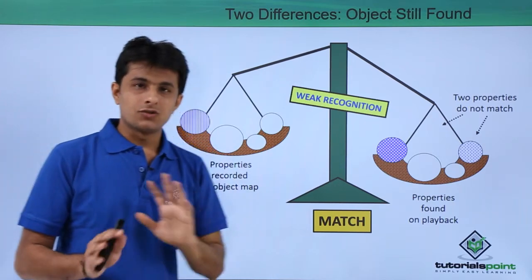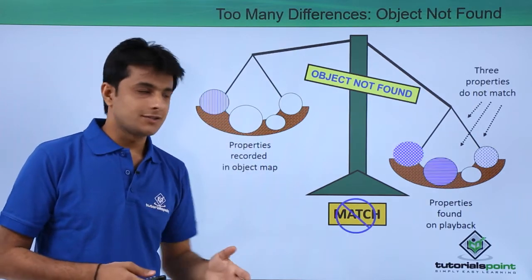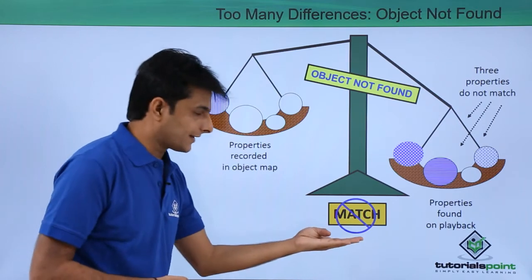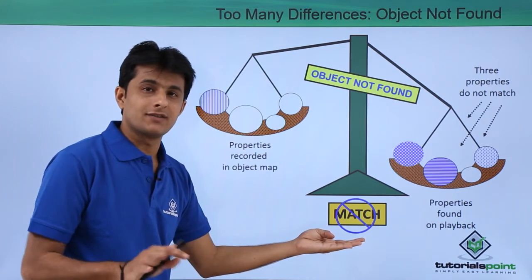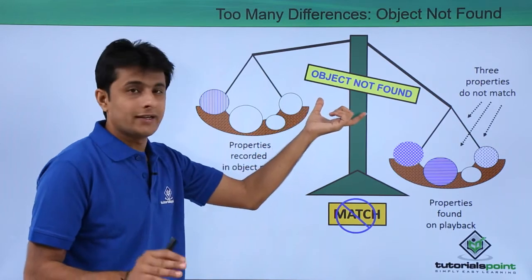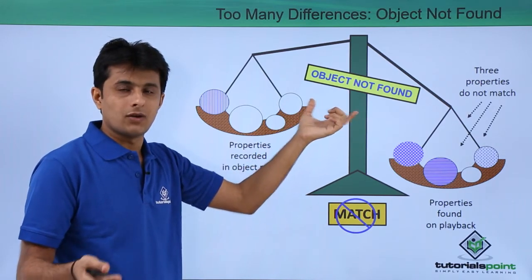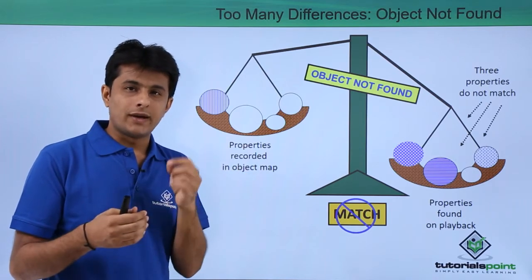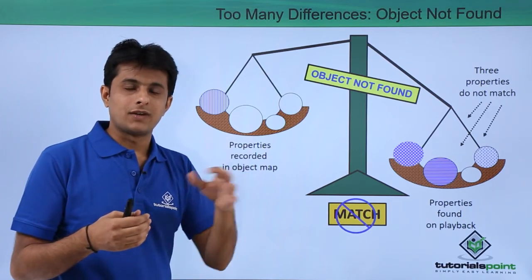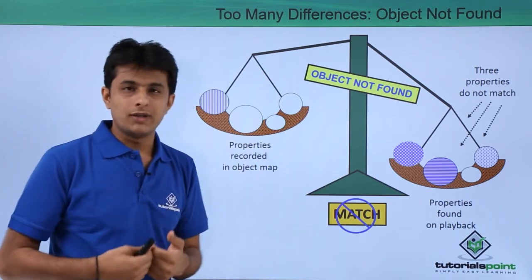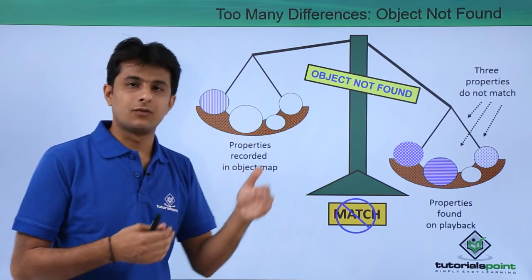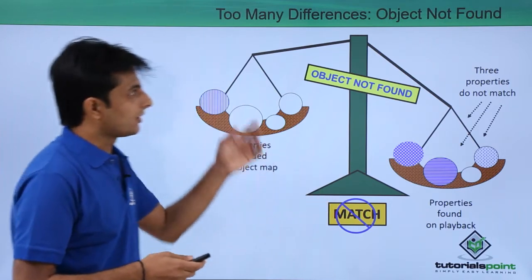Let's see the worst case when three objects are not matching. So you'll be getting as no match - that means object is not found. And here you'll be getting the error message as object not found. Now you might have a doubt: when will it say weak recognition, when will it say object not found? We are responsible for defining the threshold. We can define the limit whichever we want at the back end.